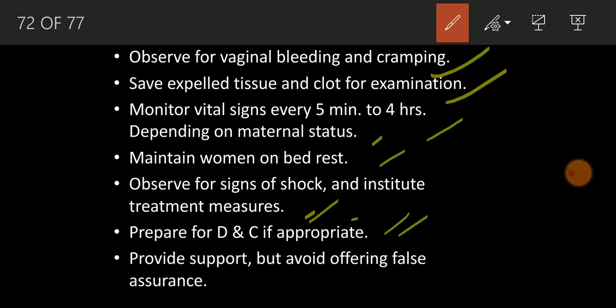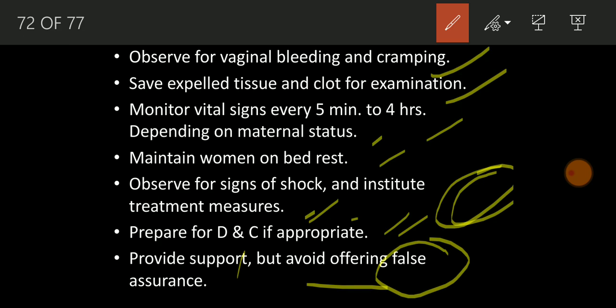Prepare for D&C — dilatation and curettage — if appropriate, if symptoms indicate abortion. Provide support but avoid offering false assurance — this is a very important intervention. Provide support, but do not give false assurance like 'don't cry, your baby will be alive.' Never give false assurance to any woman. As a nurse, always show the reality — do not keep someone in false hope.